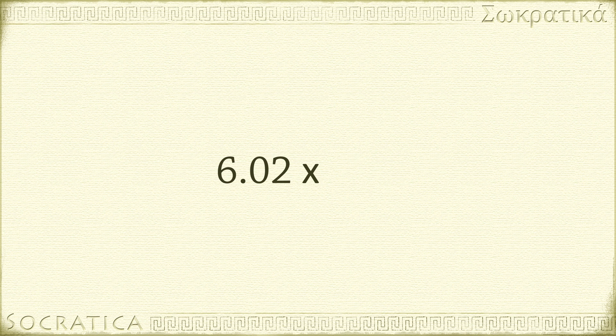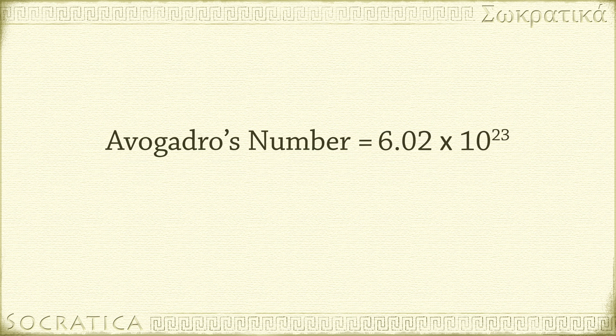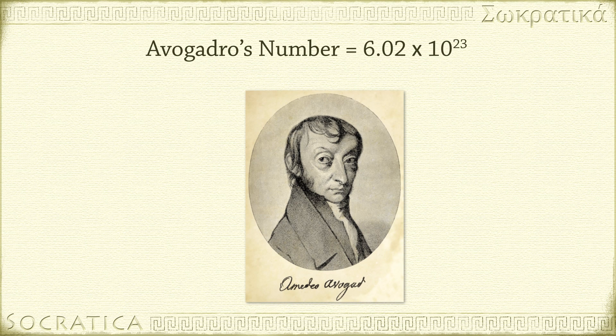6.02 times 10 to the 23rd is known as Avogadro's number, named for the great Italian chemist, Amedeo Avogadro. Although Avogadro did fundamental work on atoms and molecules, he didn't actually come up with this number. It's just named in his honor.